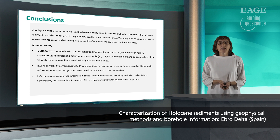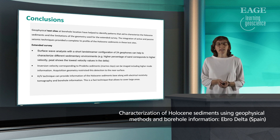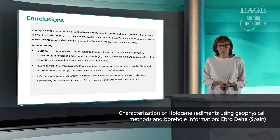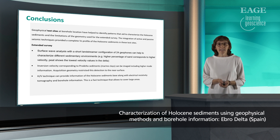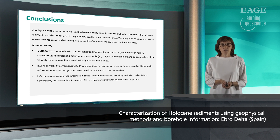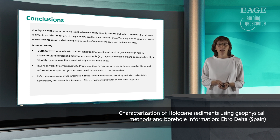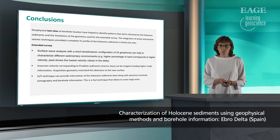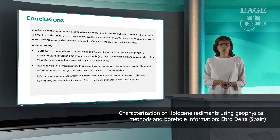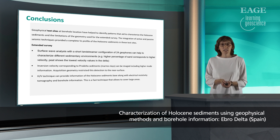Now we go to the conclusions. Using test sites with ground-truthing, we have been able to identify geophysical patterns that aid in characterizing the Holocene sediments across the whole study area. We have also assessed the limitations of the geometry used for the extended survey. The integration of active and passive seismic techniques provides a complete VS profile of the Holocene sediments at the test sites. For the extended survey, surface-wave analysis with a short-line streamer configuration of 24 geophones can help characterize different sedimentary environments. Velocity inversion corresponding to pro-delta sediments — in this case marine clays — can be imaged by including higher mode information, though acquisition geometry restricts its detection to the near surface. HVSR techniques can provide information on the Holocene sediment base, along with electrical resistivity tomography, and is a fast technique that allows coverage of large areas.